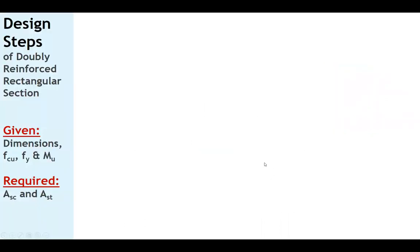Let's now summarize the design steps for doubly reinforced rectangular sections. Given information includes the cross-section dimensions (given or assumed), Fcu, fy, and the ultimate applied moment. If dimensions are not given, assume them following beam design guidelines. What is required: the area of steel in the compression side and the area of steel in the tension side.